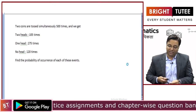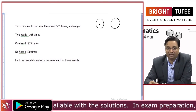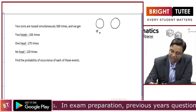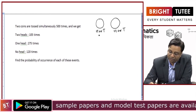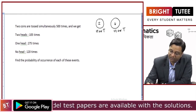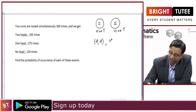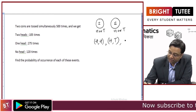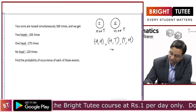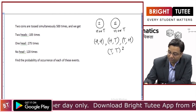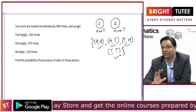Two coins are tossed simultaneously 500 times. When you toss two coins simultaneously, the possible outcomes are: first shows head and second shows head; first shows head and second shows tail; first shows tail and second shows head; or first coin shows tail and second coin also shows tail. These are the possible outcomes or events for which we calculate the probabilities.